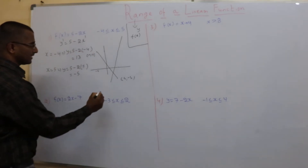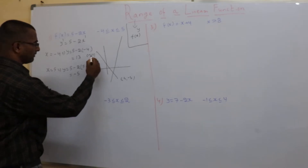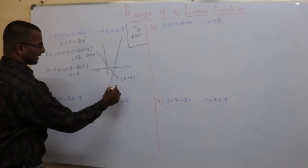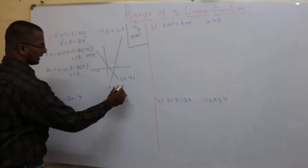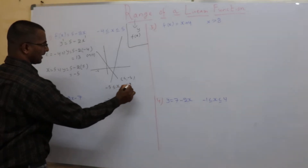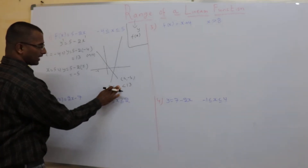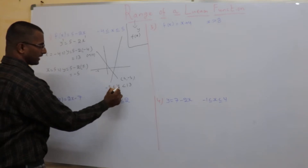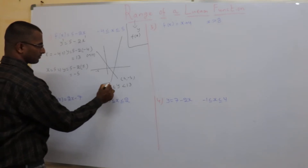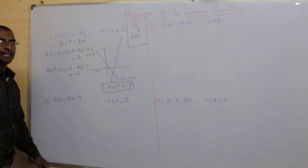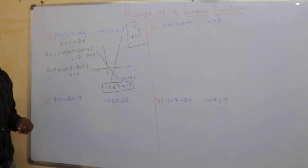So the range is between 13 and minus 5: greater than or equal to minus 5 and less than or equal to 13. These are not x values — these are the values of y. So this is my range.